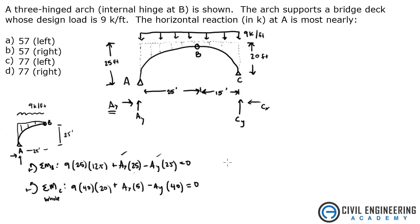Why don't I just take this first one, and I'm going to get it in terms of AY. And then I'll plug it into this guy, and we'll get AX. So if I solve for this, I get AY equals negative 25 AX minus 2812.5, all divided by negative 25.